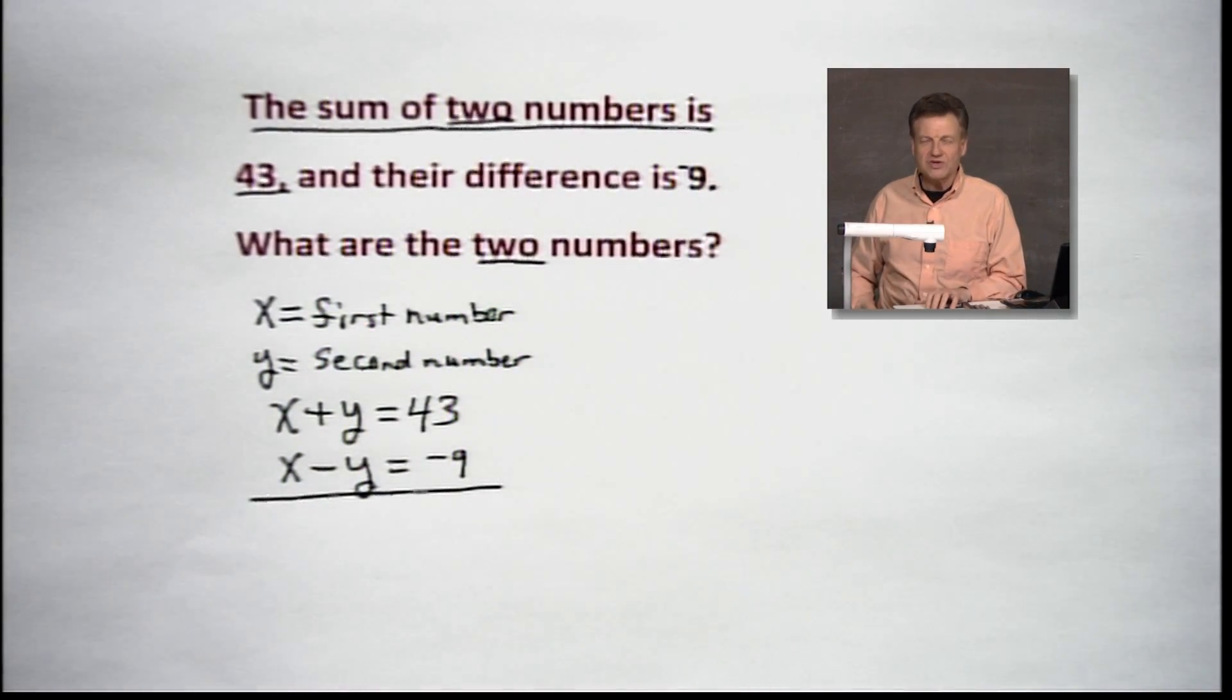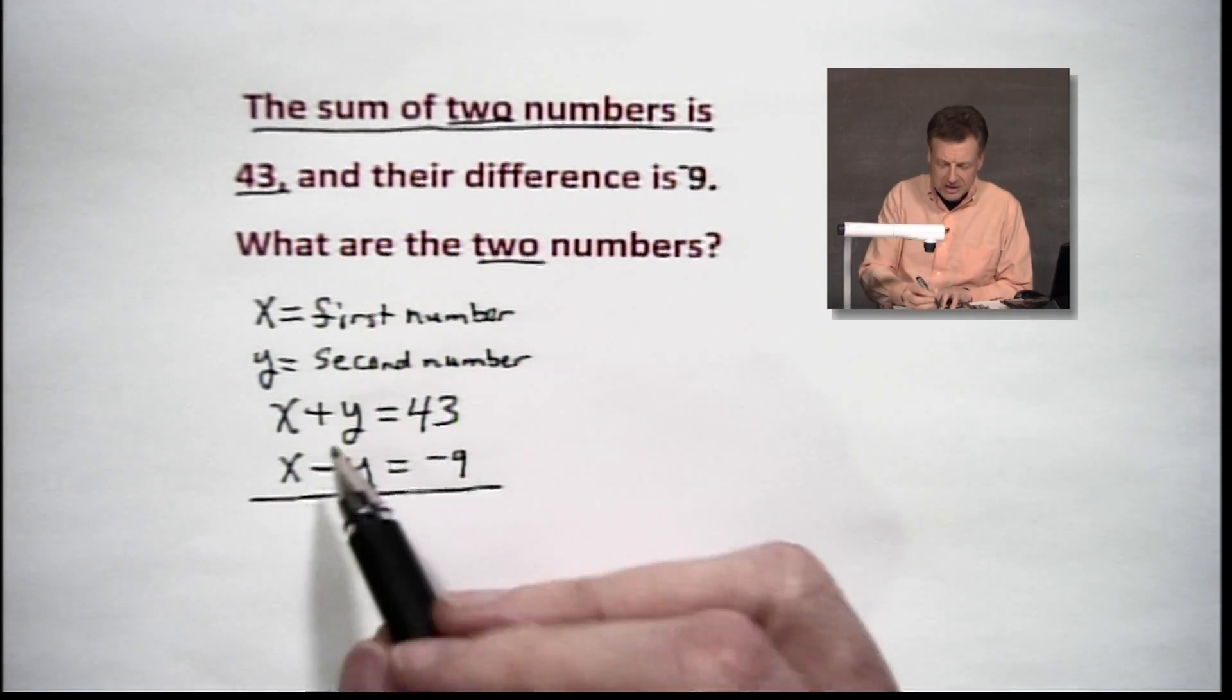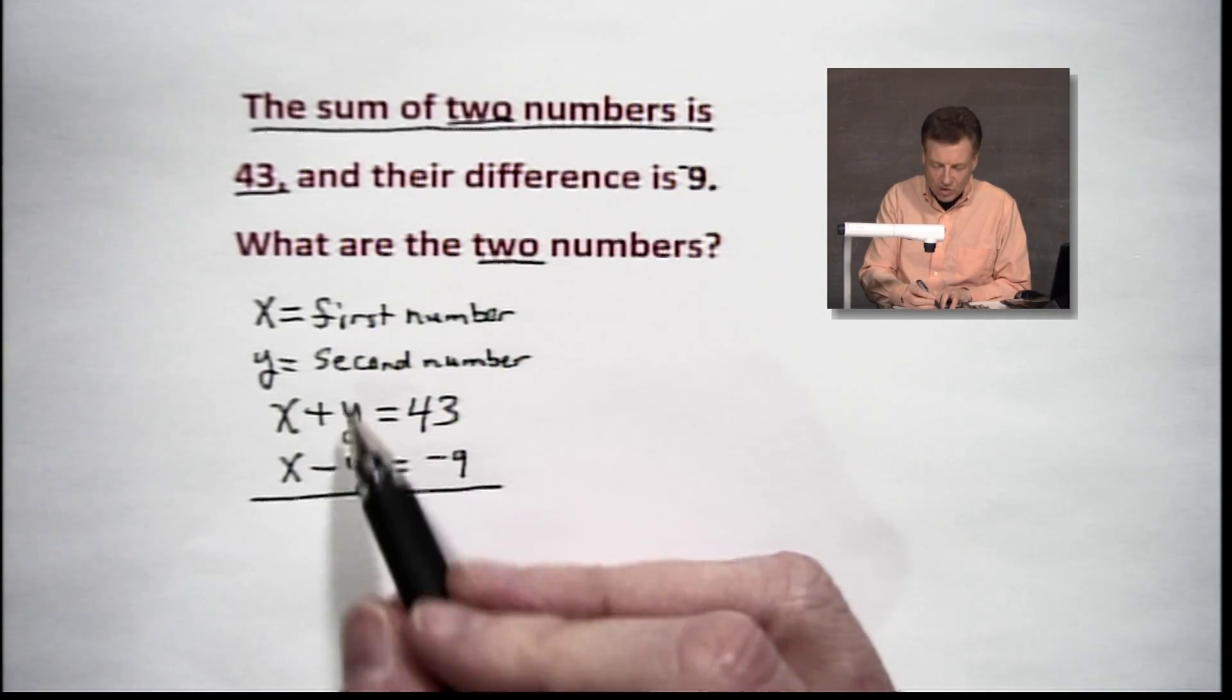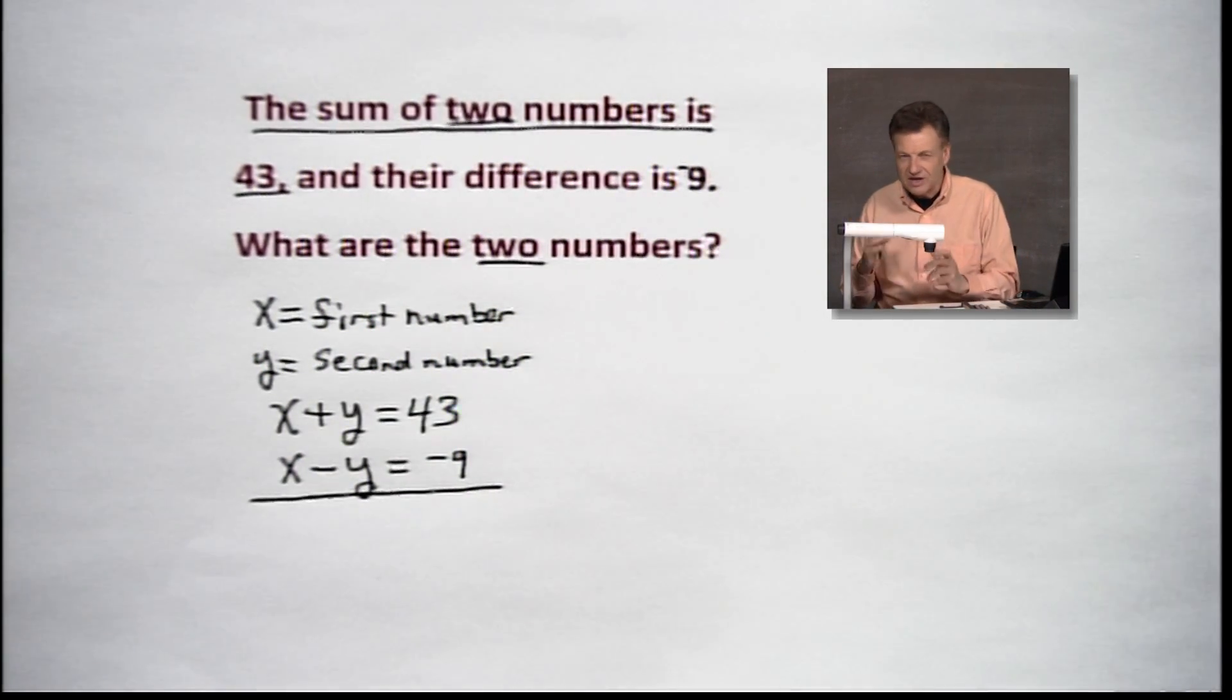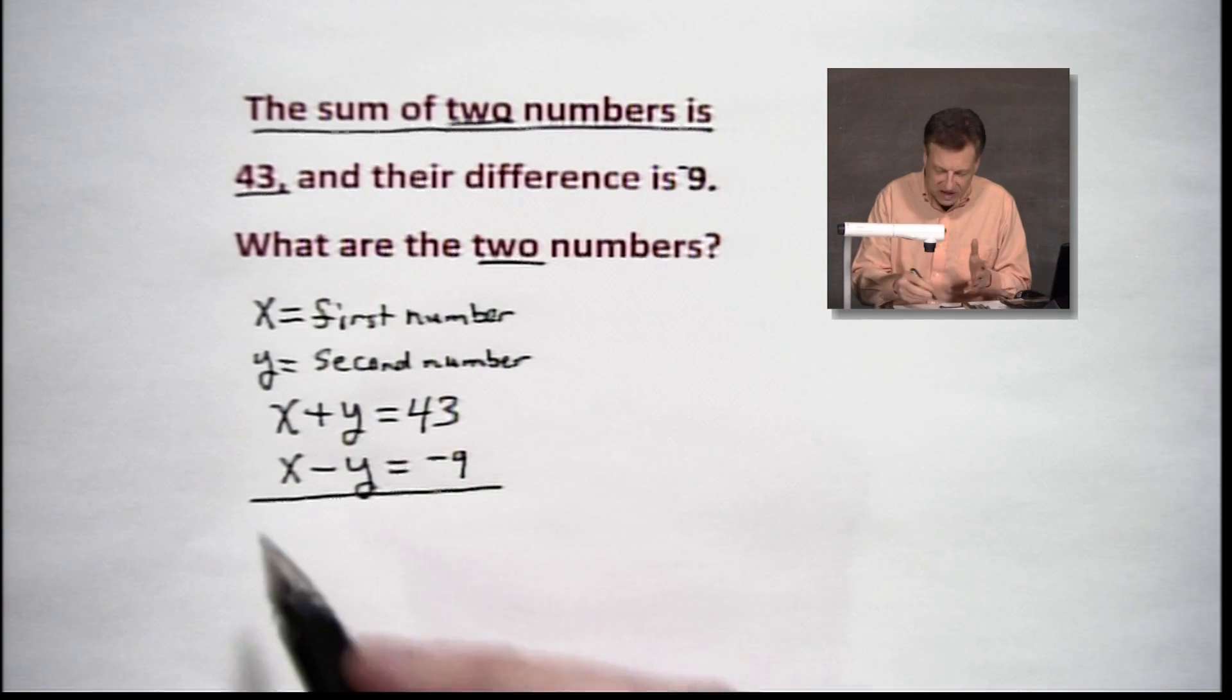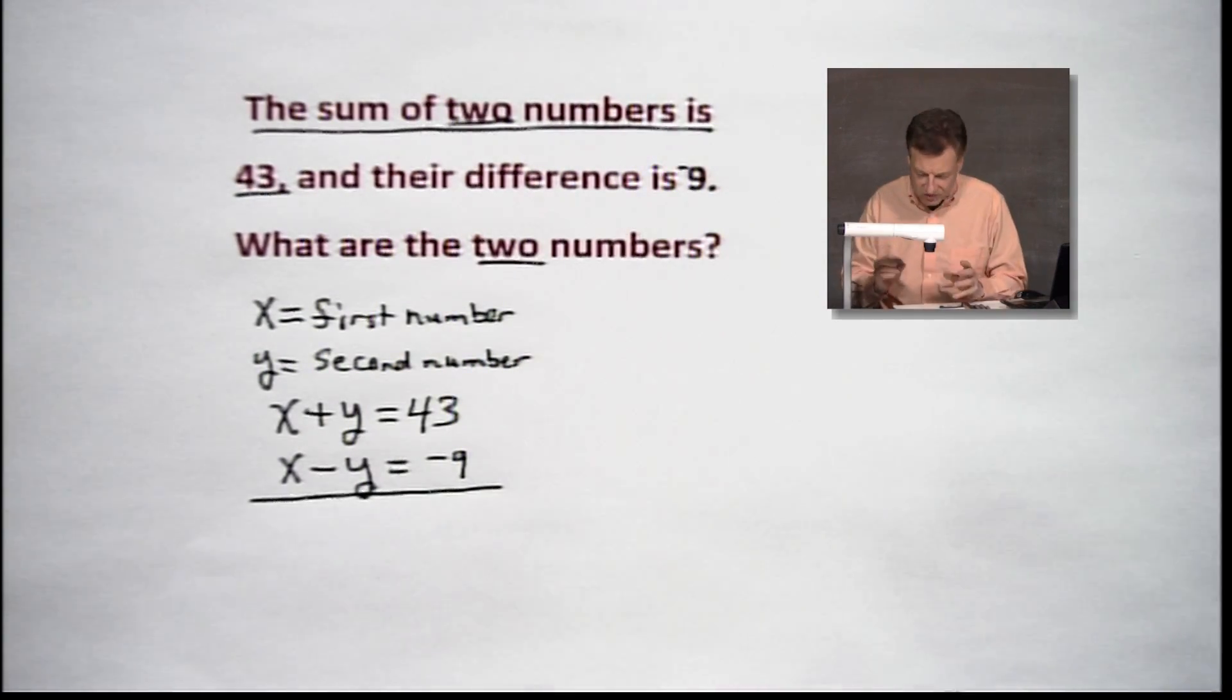Let's add these together. You say, well, why are we going to add them together? Because we've got a plus and a negative that are going to cancel each other out beautifully. So some of you say, well, when we do these kind of problems with X and Y, a lot of times we have to multiply it by something. Not in this case. This is ready to go.